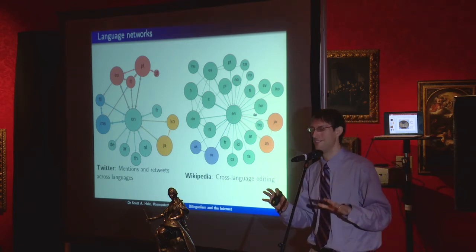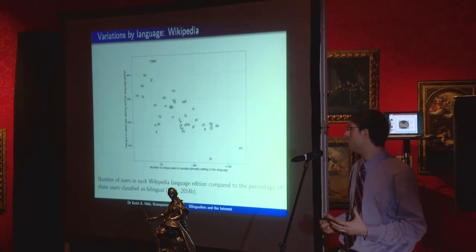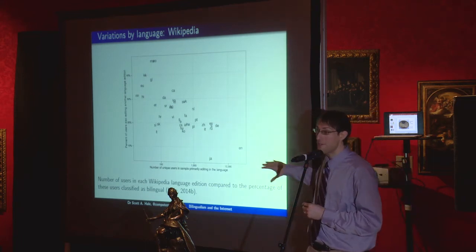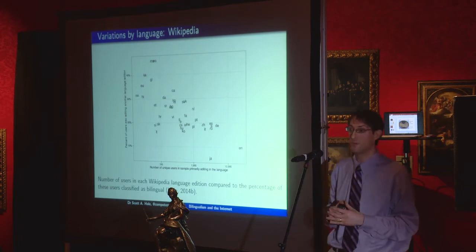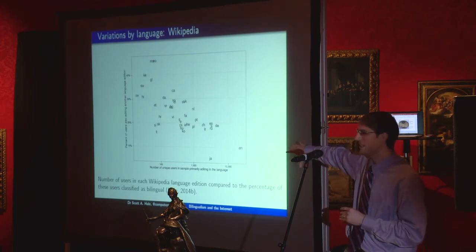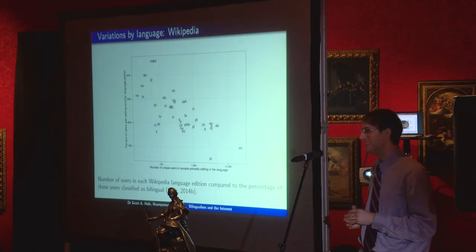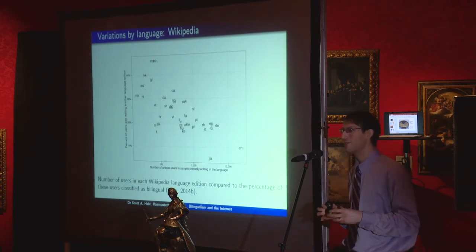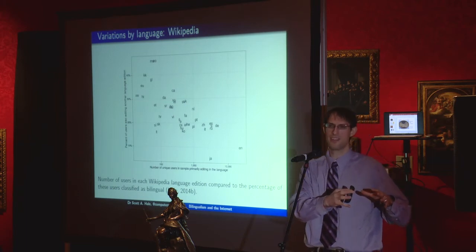You might think that if you know English you're all set and don't need to worry about content in other languages. But if we look across languages — plotting the percentage of users in a language on the horizontal axis against the percentage who edit multiple language editions on the vertical axis — there's a very clear trend: if you primarily speak a large language like English, very few people end up editing a second language edition. If you speak a much smaller language, you're much more likely to be editing a second language edition. Part of this is awareness of the limits of your language.